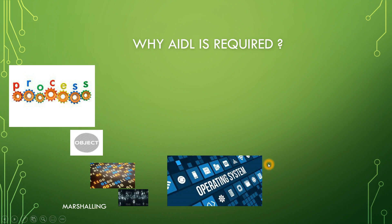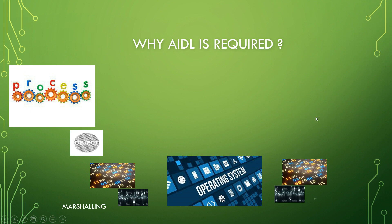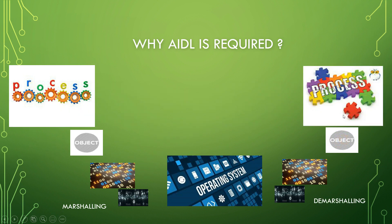Across the boundary we communicate with another process. At the other end, the operating system will gather all these primitive types and again build the object out of them. This is called demarshalling. The object which one process had to send is now received by the other process. Writing all this marshalling and demarshalling code manually is very tedious, which is why AIDL will generate all that code for us.